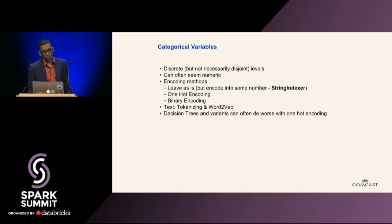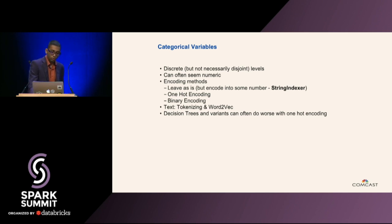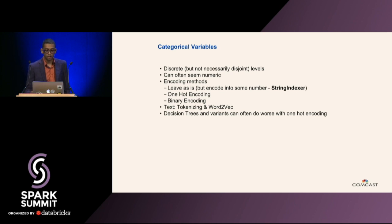Specifically for text, you'll need to understand things like tokenization and word2vec. Word2vec is a way to represent a word or phrase as a vector, so you can add or subtract these vectors to add or subtract semantic meaning. Encoding is quite important for model performance. Decision trees can often have worse performance with one-hot encoding because they split based on a feature, and with too much cardinality they do sub-optimal pruning — sometimes picking a sub-optimal feature compared to just leaving the original high-cardinality feature as a numerical variable.